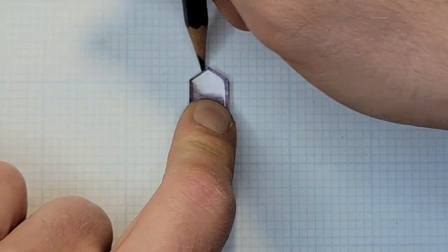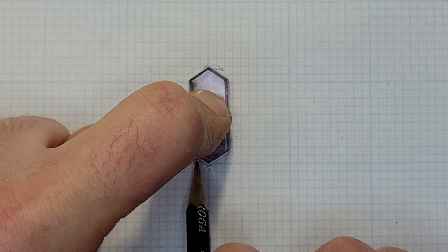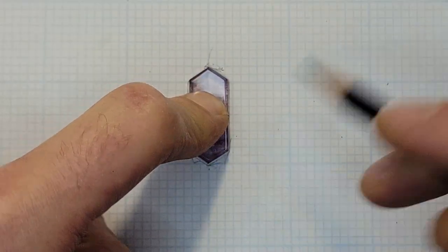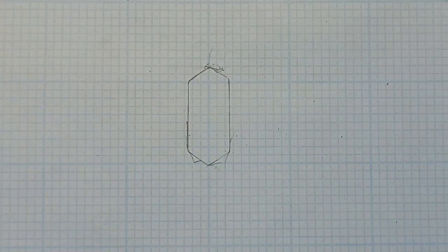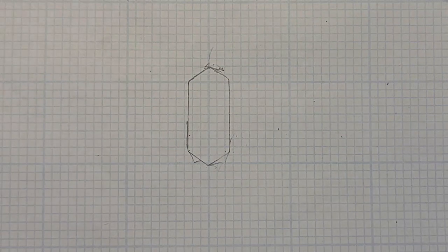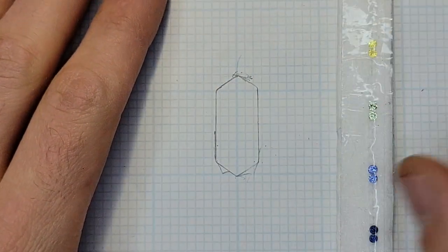So the first thing we're going to start off by doing is tracing our center stone. I like to align my center stone on the thicker line that goes through the center of my stone. I like to be able to have a good middle line for my design so that way I can make sure all aspects of it are balanced.